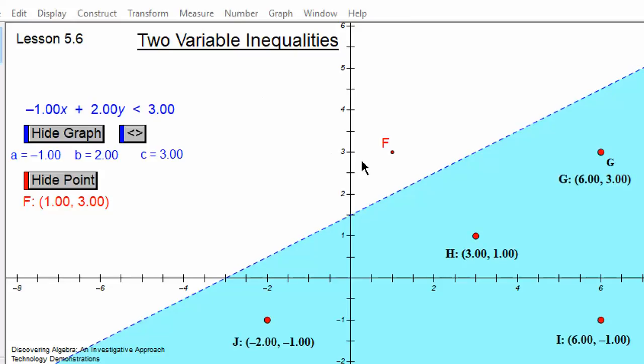For question 4, you will put the coordinates of F, 1 comma 3, into the graph and indicate if it's a true or false statement.